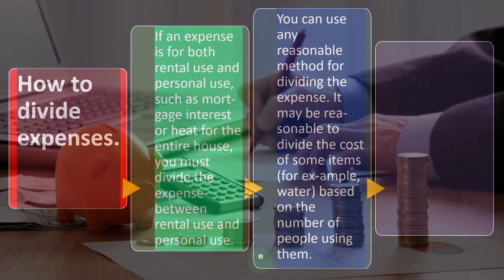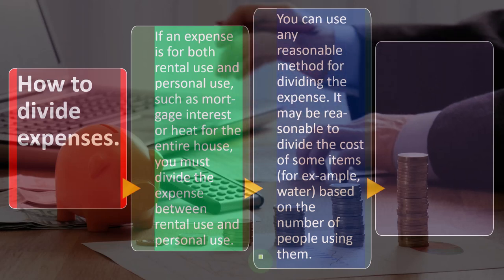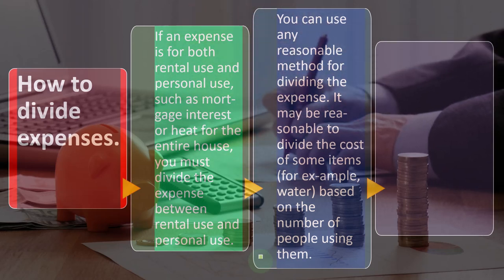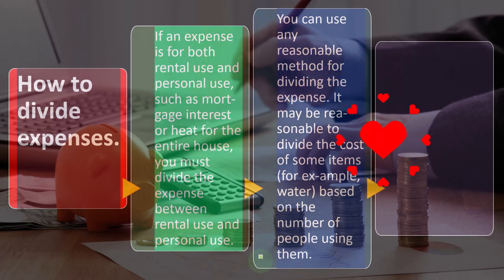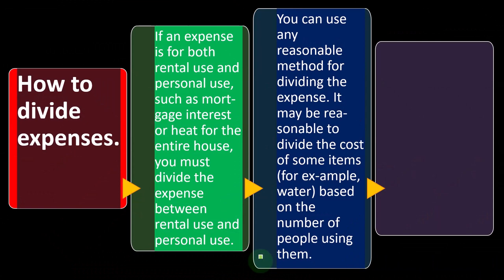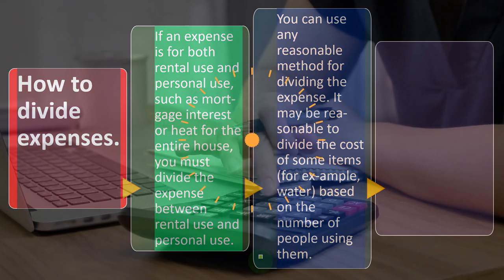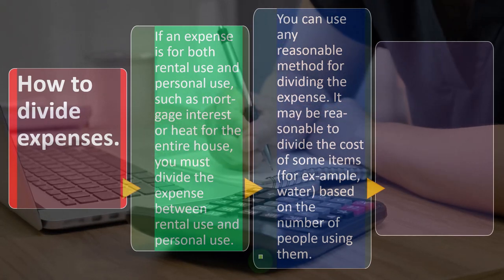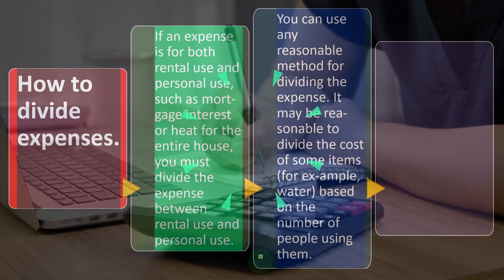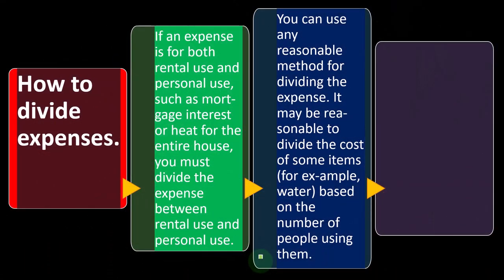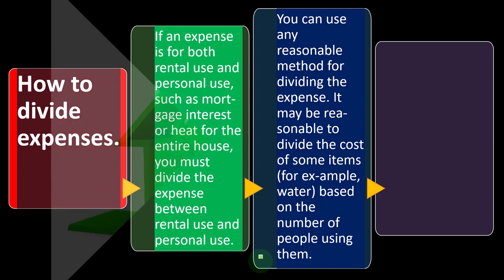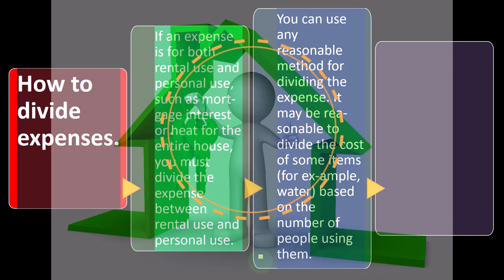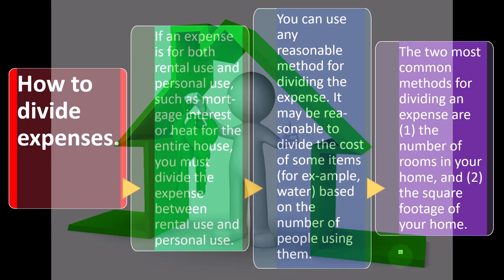In some cases, other reasonable methods may be appropriate depending on the expense. For example, for water usage, something more accurate than square footage might be the number of people consuming water in the home. If you're the homeowner and one person, but your renters are a whole family of seven people — even if they're in a smaller space — they might use far more water than the square footage ratio would suggest. So you might use a different ratio if it better reflects the appropriate activity base.